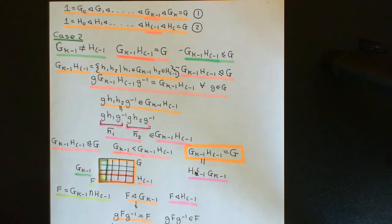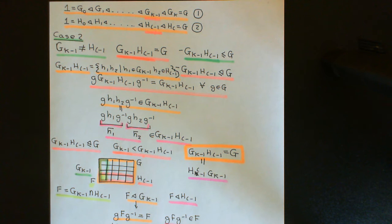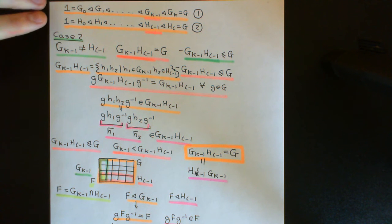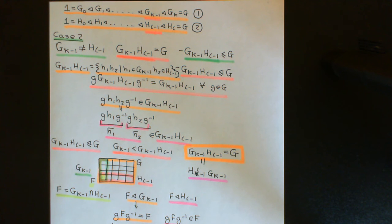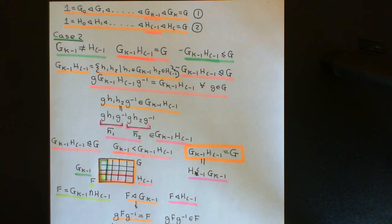We'll be able to say that two and its related series have the same length and corresponding composition factors. We will then prove that the two new composition series we have built also have the same length and corresponding composition factors, and hence we will have proven that the original two must share the same length and composition factors through this indirect pathway.